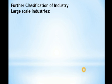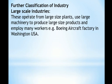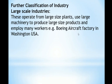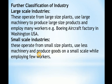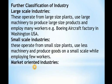Large scale industries operate from large size plants, use large machines to produce large products, and employ a great deal of workers. A well-known example is the Boeing aircraft factory in Washington, USA — reportedly the largest building on Earth in terms of surface area. Small scale industries, similar to light industries, operate from small size plants, use fewer machines, produce goods on a smaller scale, and employ few workers.